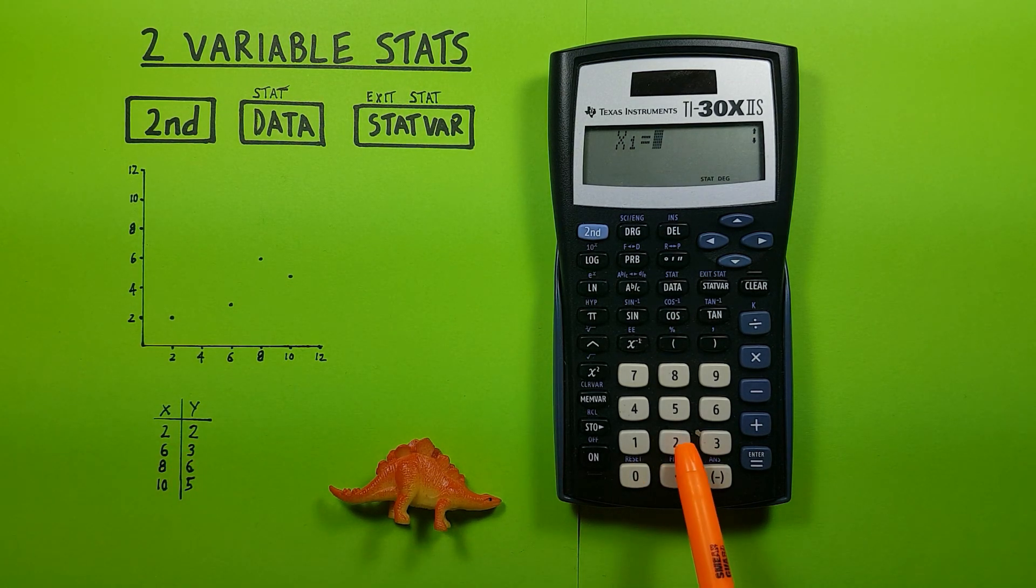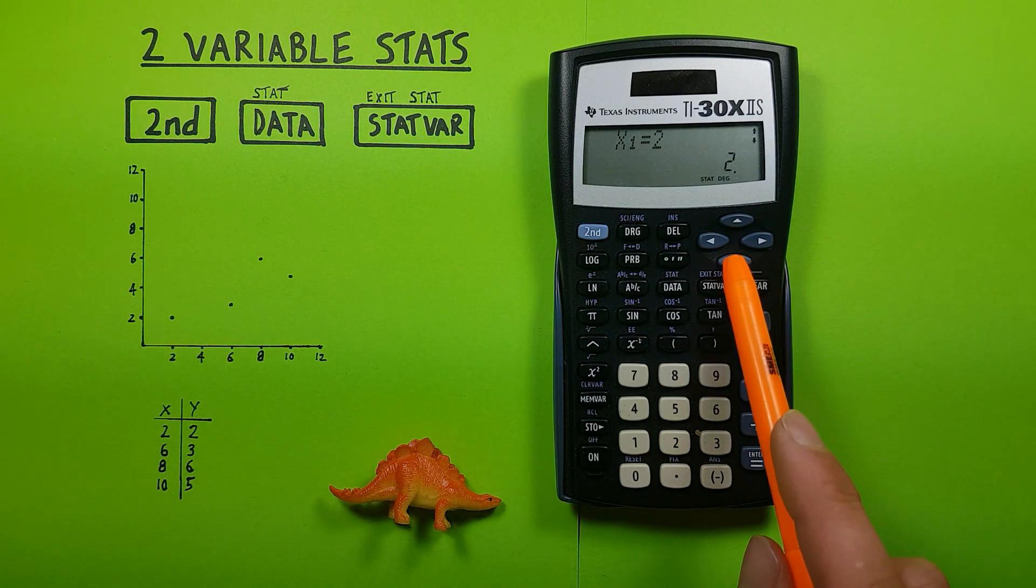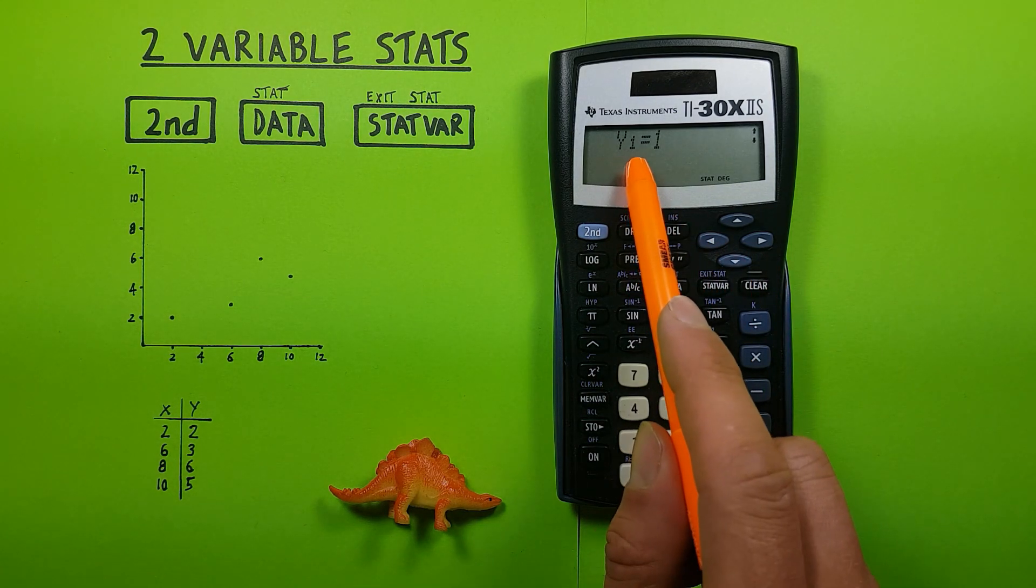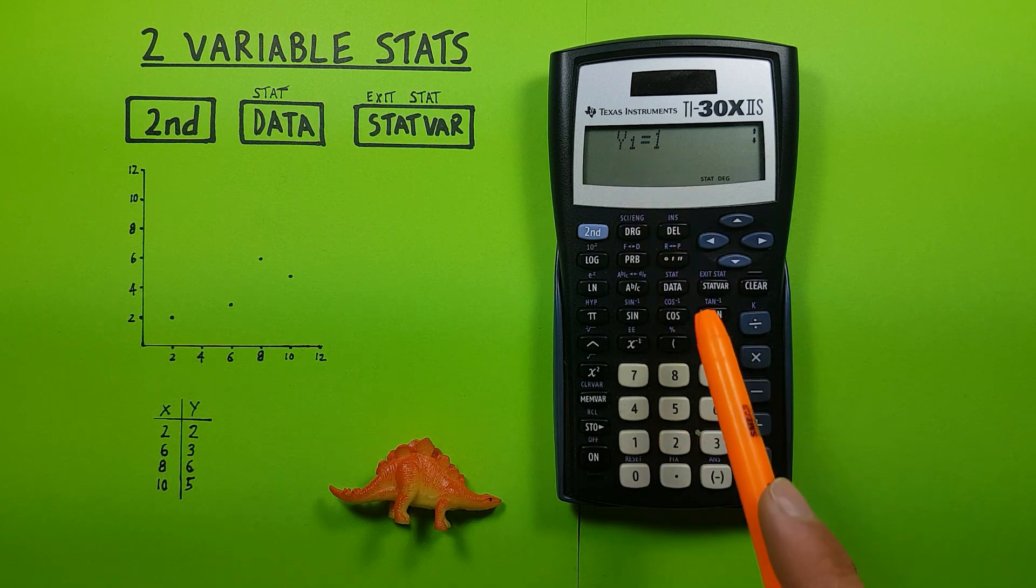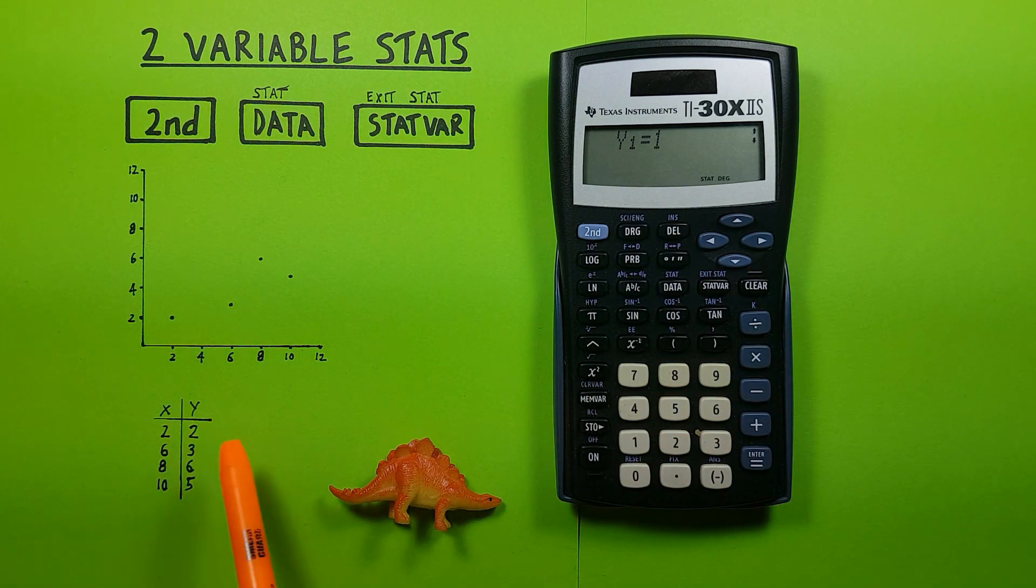So we press 2 and enter, and then we go down 1 and we see y equals 1. We want that to be 2 because our y is 2, so we press 2.